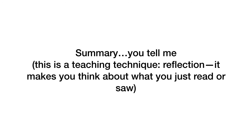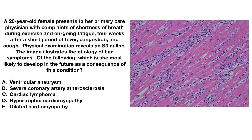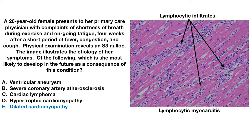Now for the summary questions, using a teaching technique based on reflection to make you think about what you just saw. First question: a 26-year-old female presents with shortness of breath during exercise and fatigue four weeks after a period of fever, congestion, and cough. This fits with cardiac effects after a viral prodrome, consistent with myocarditis. The S3 gallop suggests heart failure. The histology shows prominent lymphocytic infiltrates, consistent with lymphocytic myocarditis, and the most likely consequence is dilated cardiomyopathy.